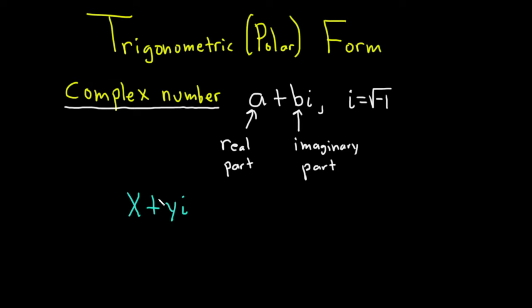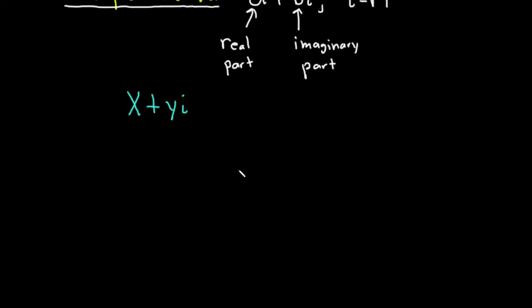So what is the trig form of a complex number? Let me show you and draw a little picture here. We're going to draw the coordinate plane here. Say this is the x-axis here and this is the y-axis here. What we can do is take our complex number and plot it in the x-y plane. So you travel a distance of x, say they're both positive, a distance of y and so maybe you're here.